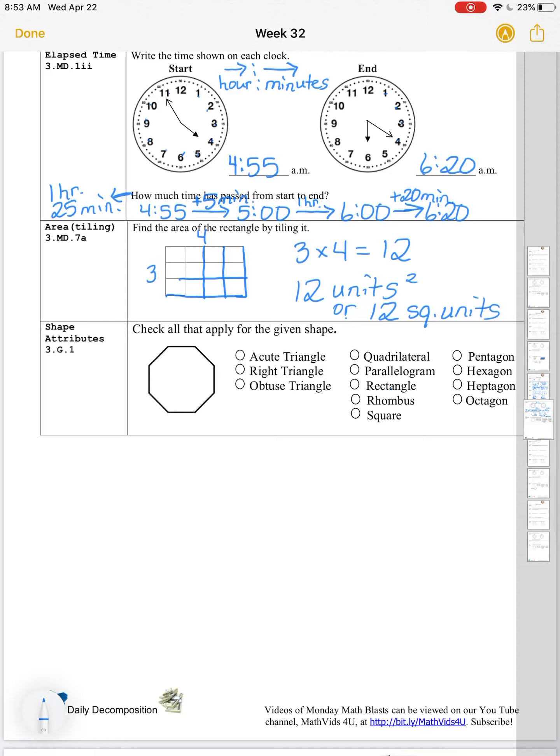Shape attributes. Check all that apply for the given shape. Here in the first column, all of the names are dealing with triangles. Tri means three. This is not a three-sided polygon, so no triangle names will match our shape. In the second column, we have quadrilaterals and special types of quadrilaterals. Quadrilaterals are four-sided figures, so again, none of those names will match our shape. In the third column, we have polygons that have specific numbers of sides. Pentagons five, hexagons six, heptagons seven, and octagons eight. And we can see that our polygon here has eight sides, so it's going to be the octagon. And I might say here, octa is what helped me.